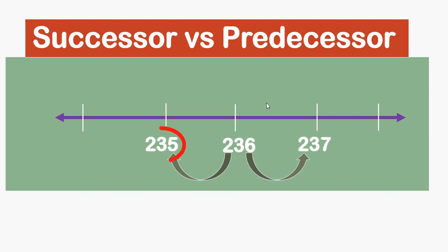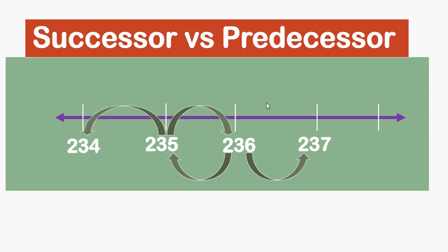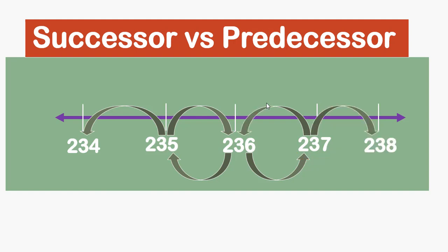If we take 235 as a number, then its successor is 236 and its predecessor is 234. In the same way, if we take 237 as a number, then its predecessor is 236 and its successor is 238.